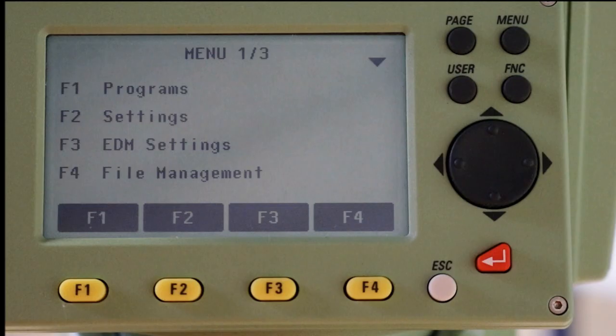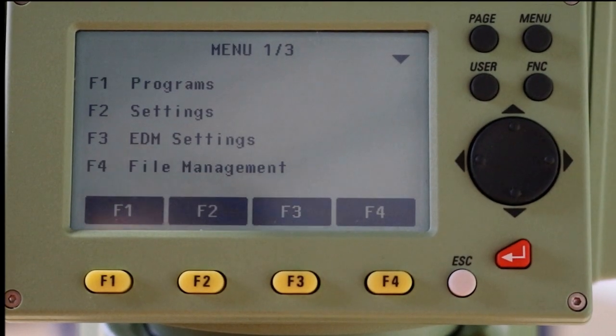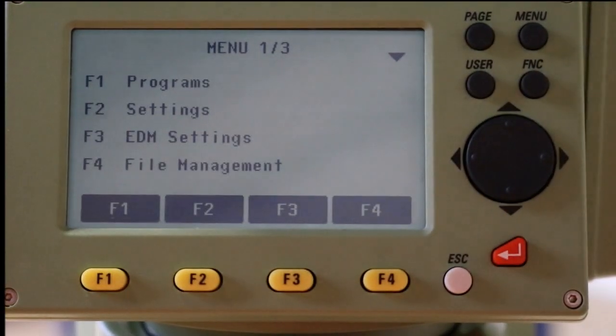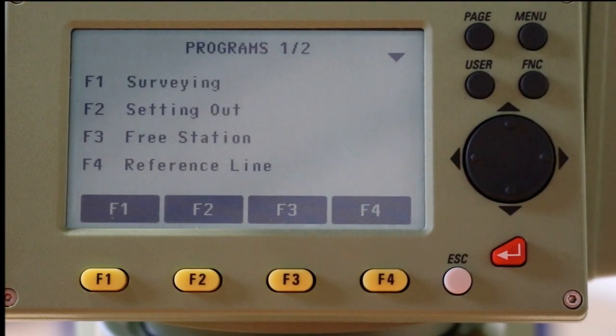Now we have to determine the location of the total station. There are two ways of doing this. The first is setting up over an unknown point and backsiding to known points. The other is setting up over a known point and backsiding to other known points. But we will begin with the first method, known as a free station setup.